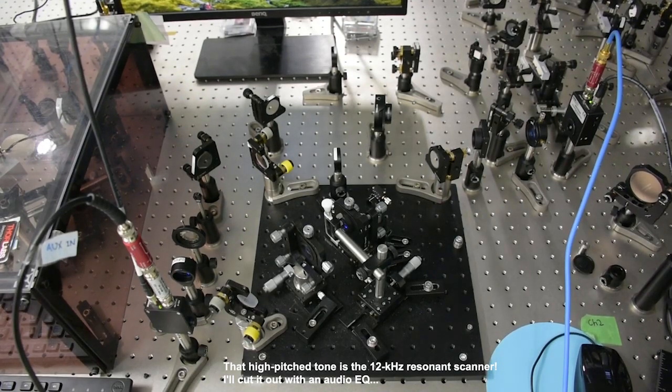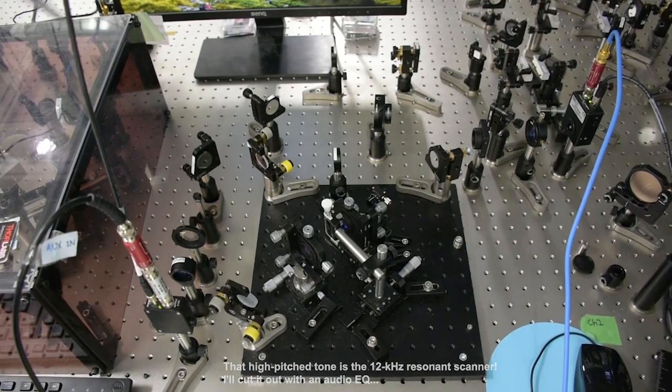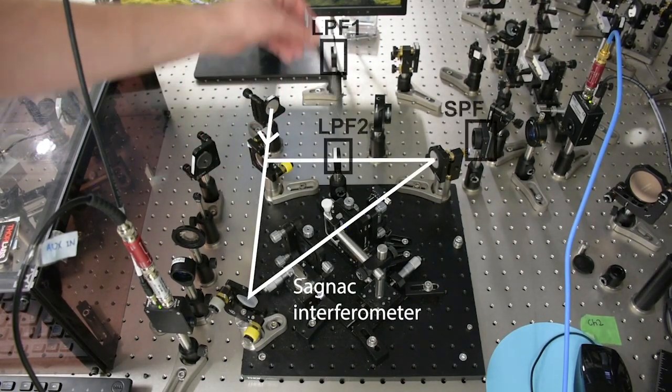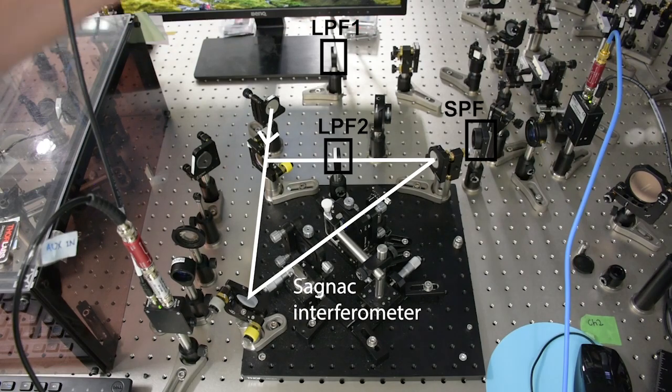All right, welcome to the heart of DIVS. This is the Sagnac interferometer with some optical filtering integrated to detect both SEISRS and FT-CARS.